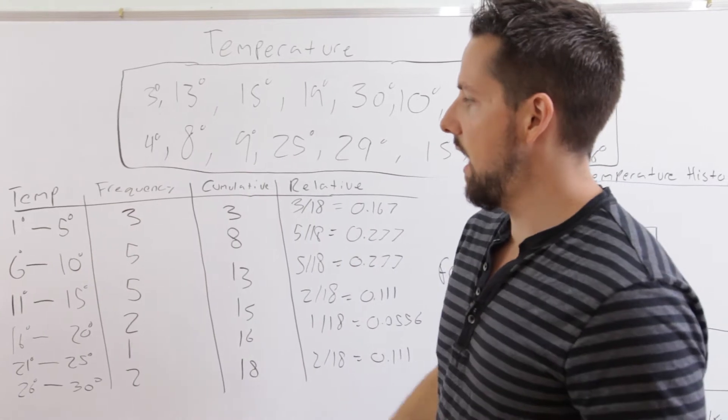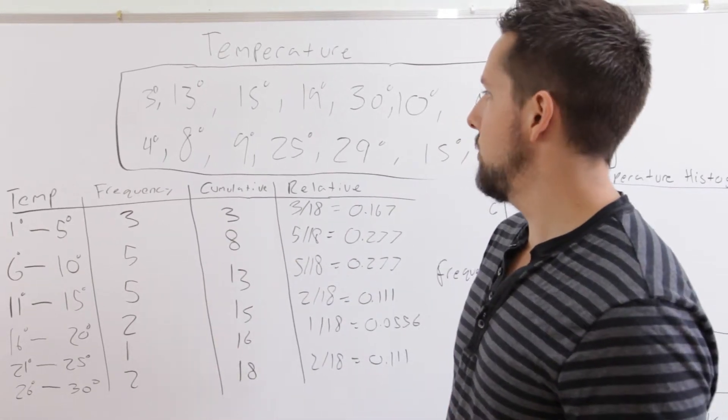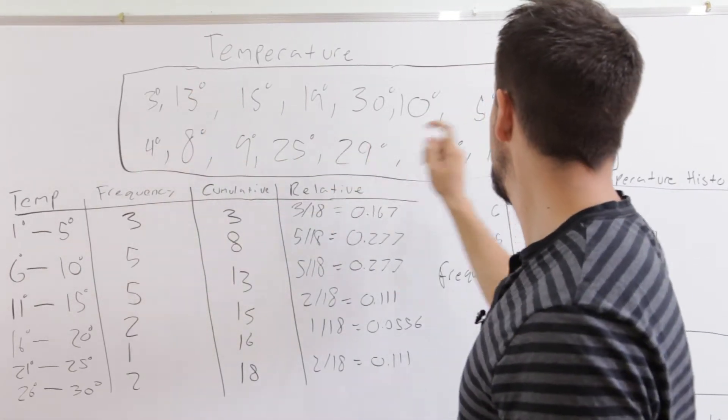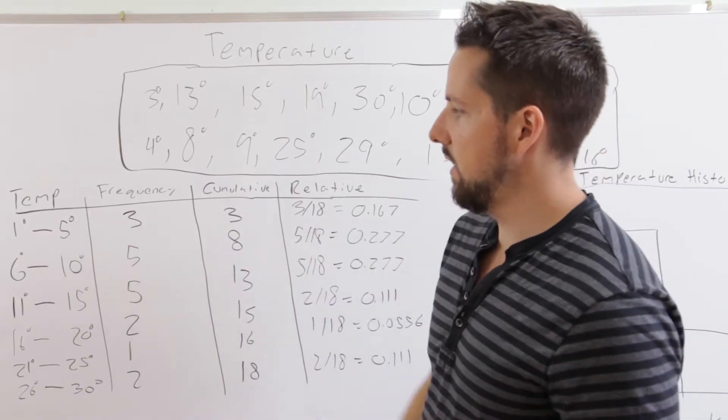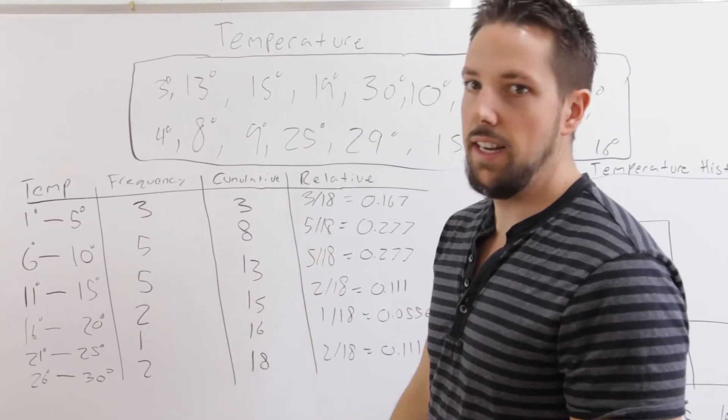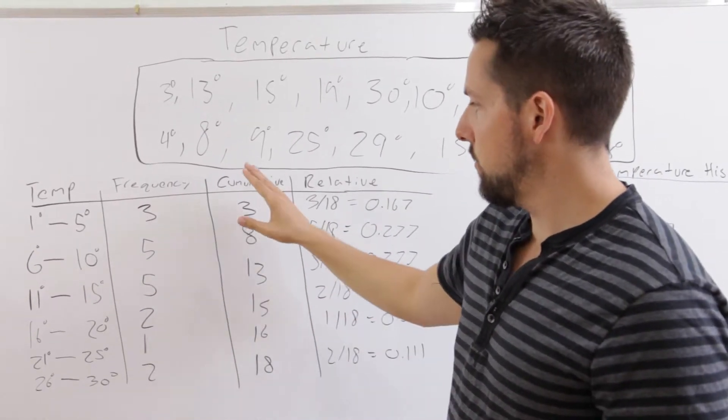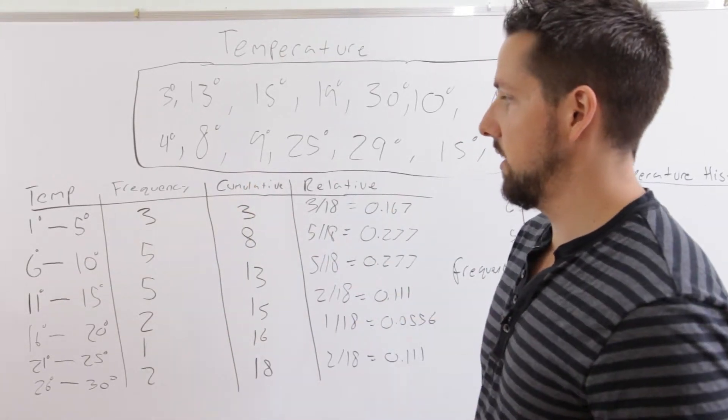So we have the frequency, and we get that by counting. So the numbers between one and five, one, two, three, so that's there, and so on for the rest of it. And now just to explain, we'll do cumulative and relative frequency as well.